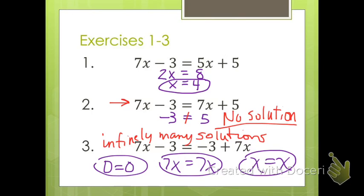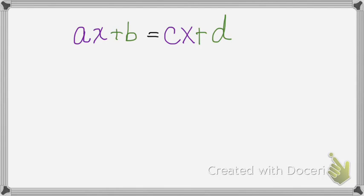What we want to do is look at some characteristics of these equations and see if we can figure out what's making this happen — what is true when there's one solution, no solution, or infinitely many solutions. All of these equations can be written in the form ax plus b equals cx plus d.